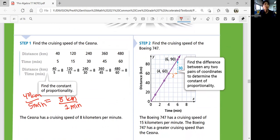And so look at this graph. One point will tell you how many distances, how much distance you travel per minute. So Boeing 747 has points 4 comma 60 and 6 comma 90. That means it goes 60 kilometers per 4 minute or 90 kilometers per 6 minute. And they should be equivalent ratio. And if you simplify that, that's going to be 15 kilometers per minute. So comparing 15 kilometers per minute and 8 kilometers per minute, obviously, Boeing 747 has greater cruising speed than the Cessna.